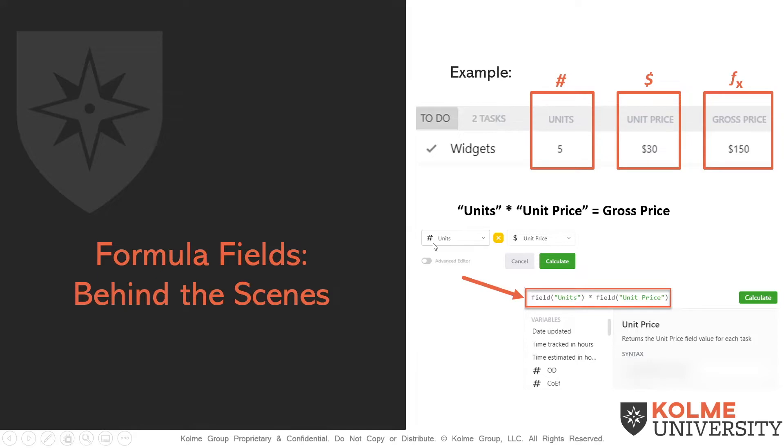And in the Basic Formula Editor, we chose our two variables, our units field and our unit price field, and the mathematical function of multiplication. And we get the multiplied product of our gross price.